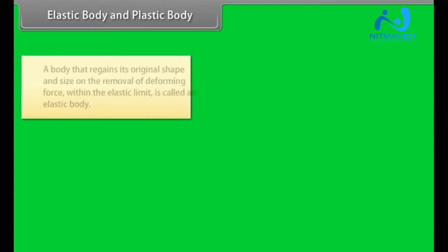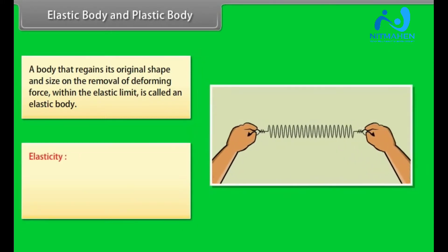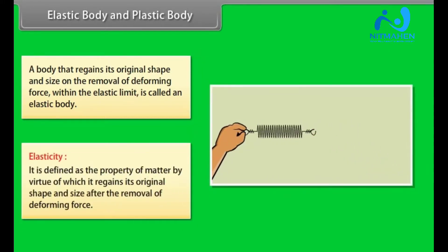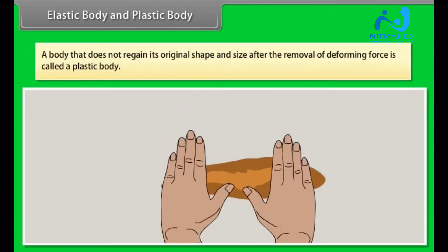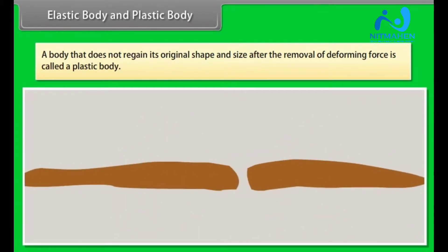Elastic body and plastic body. A body that regains its original shape and size on the removal of deforming force within the elastic limit is called an elastic body. Elasticity is defined as the property of matter by virtue of which it regains its original shape and size after the removal of deforming force. A body that does not regain its original shape and size after the removal of deforming force is called a plastic body.